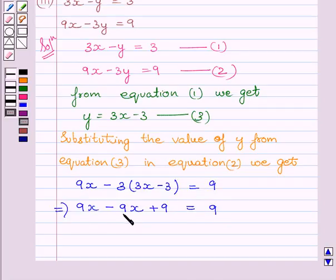9x minus 9x is equal to 0, so we get 9 is equal to 9. Here we can see y is equal to 3x minus 3 satisfies equation 2.